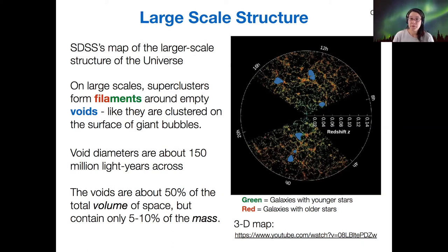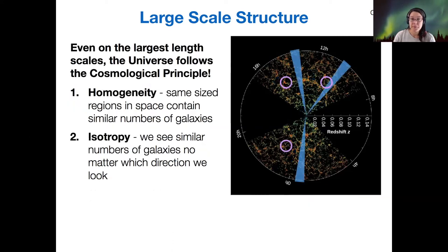Most of the dark matter is also along these filaments. That suggests to us that perhaps there's a connection between why the dark matter is in the filaments and why the regular matter is in the filaments.